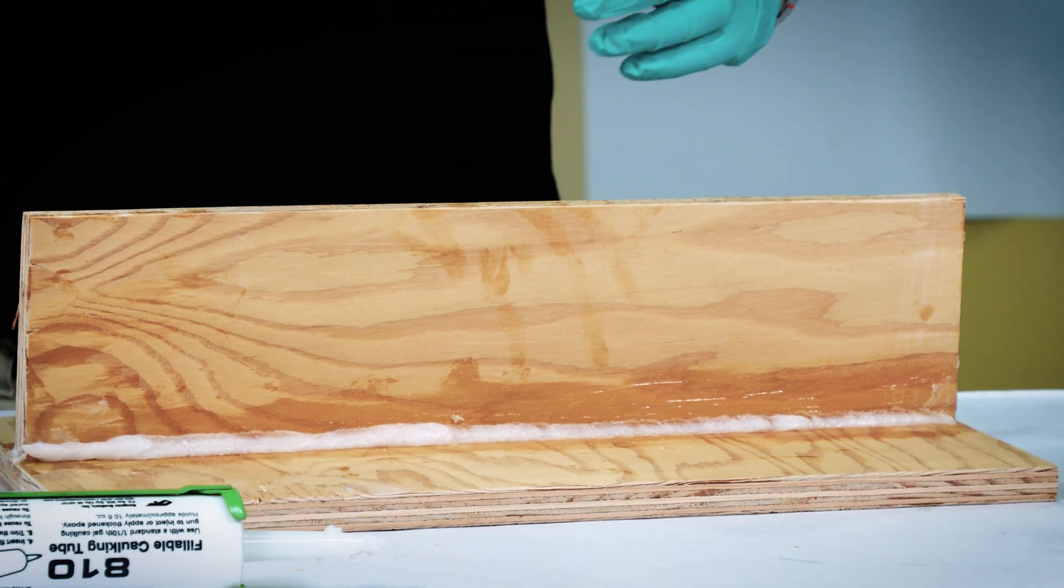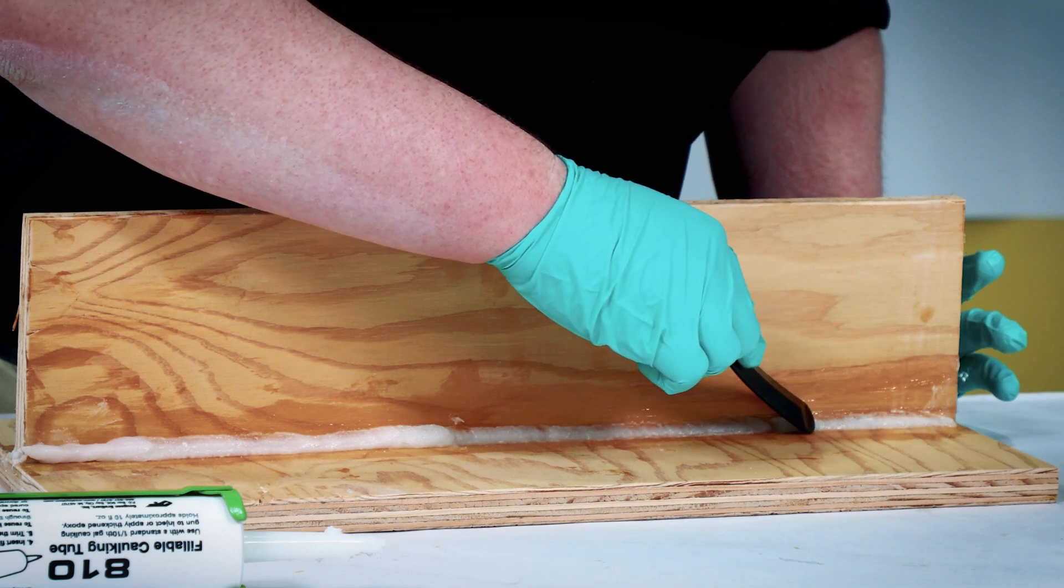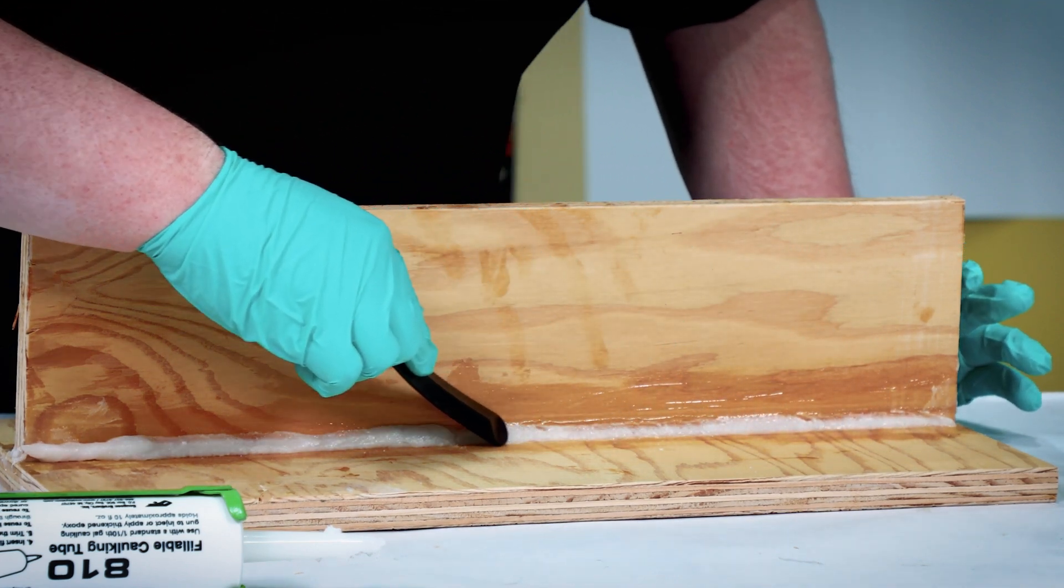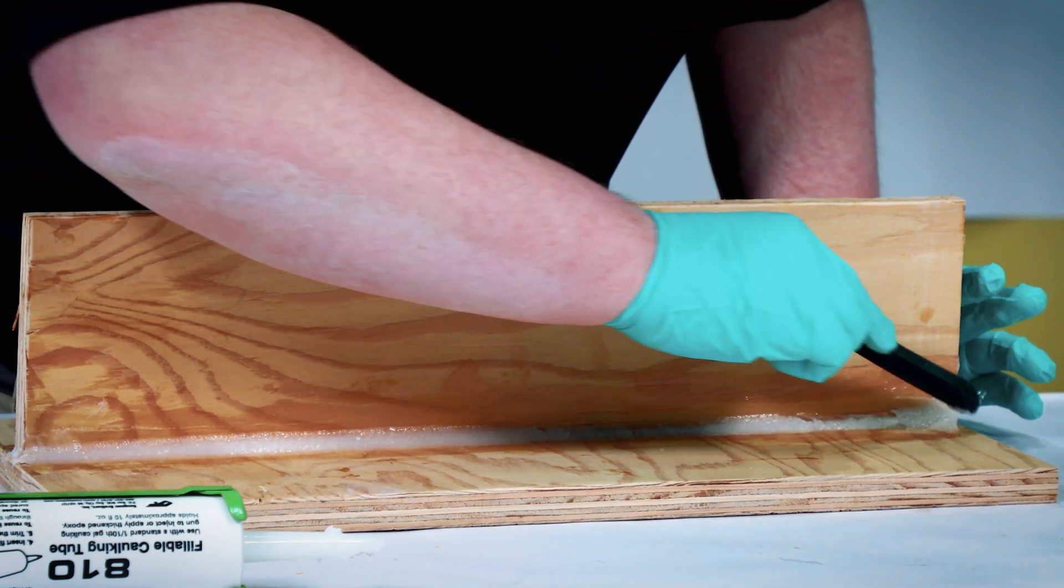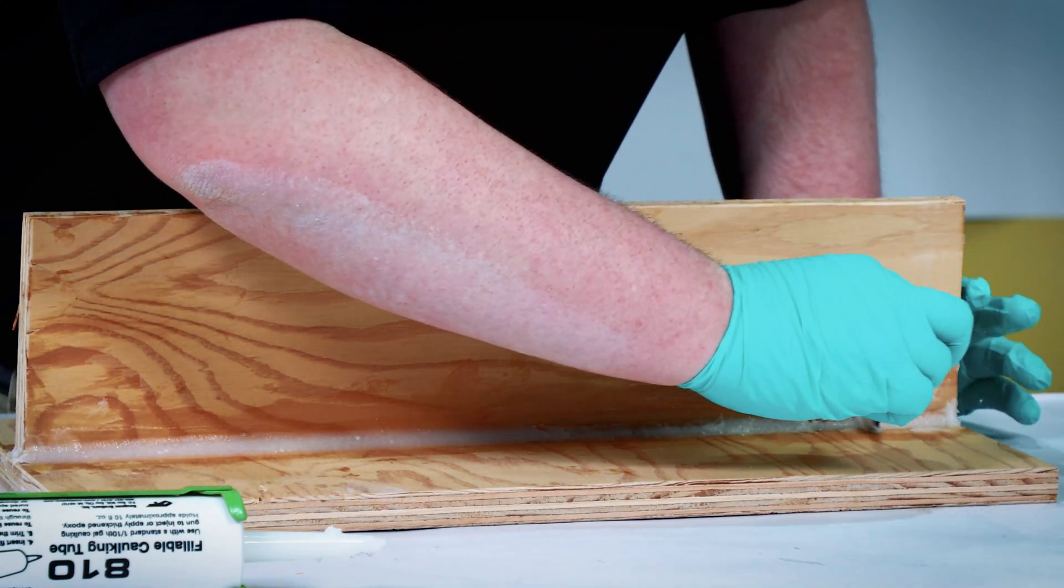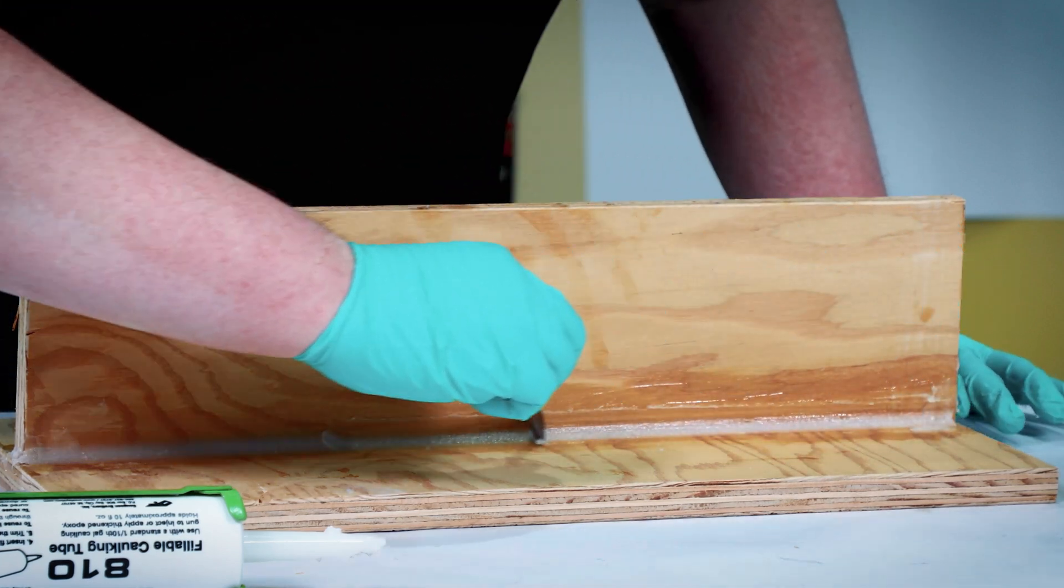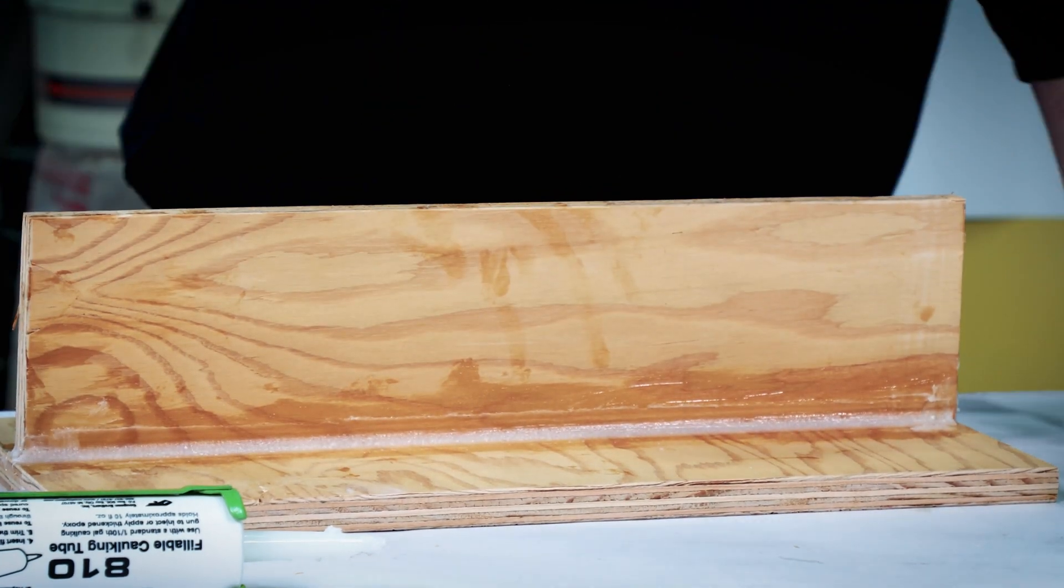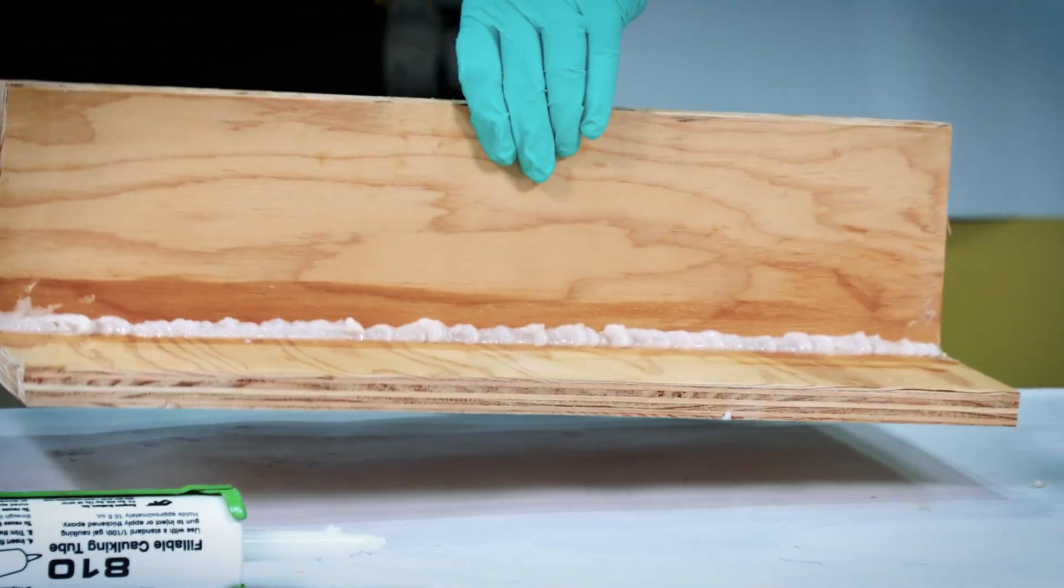Then we can come back with our fresh mixing stick and run it across. And you see it was a little too light on it near that front, so I'm going to have to come back and fill it again. We've got a little extra here. We can just run it back, flip it back around to our side we did with the 810 caulking tube.